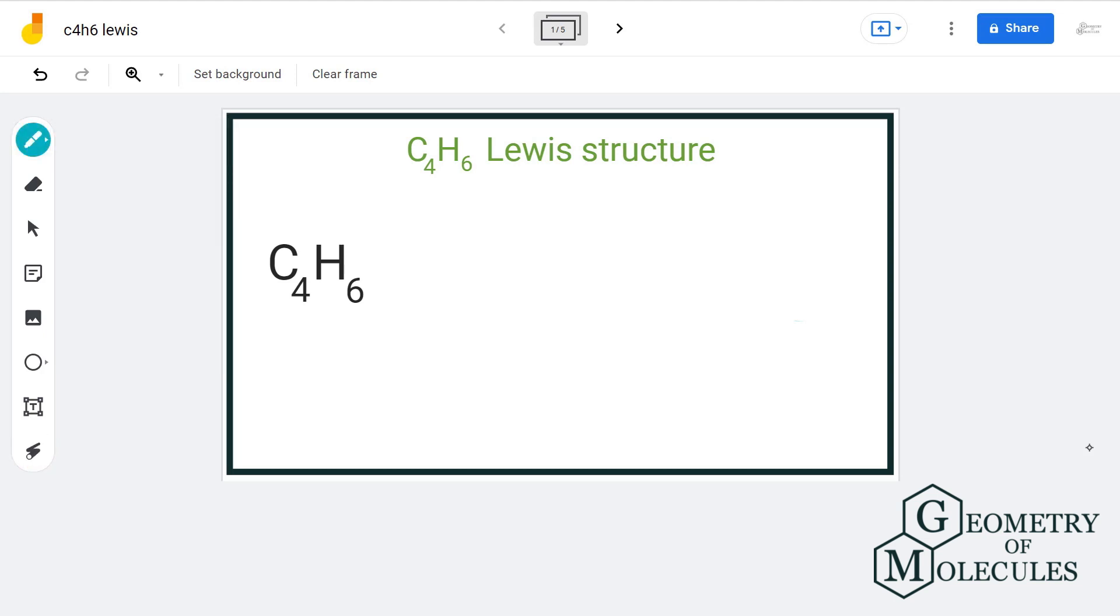You can say different connectivities. Such type of compounds are known as structural isomers. There are total of eight isomers having formula C4H6 and we will discuss the Lewis structure of some of them.